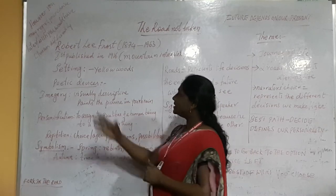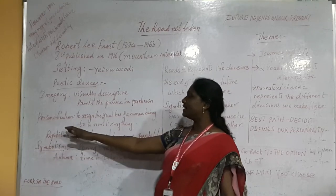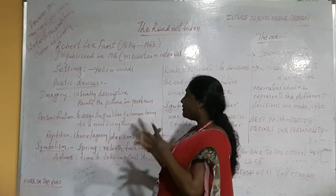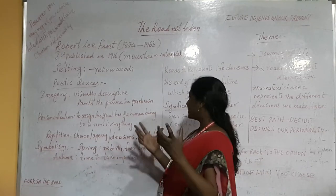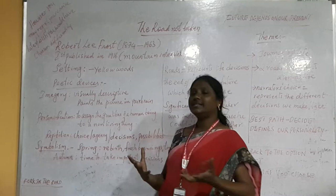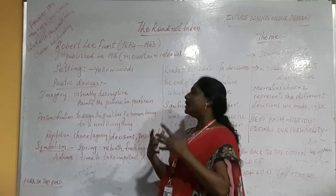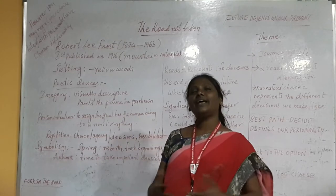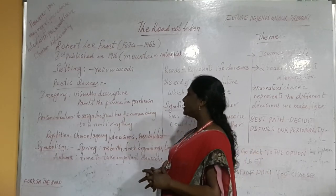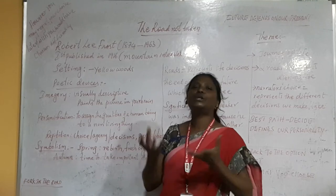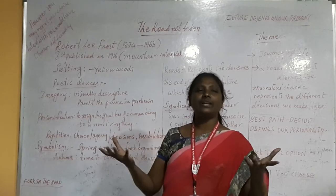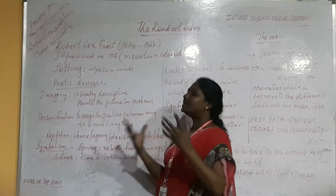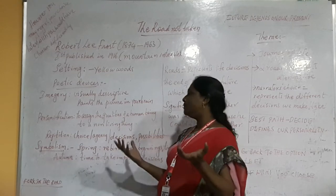Now let us take another device: personification. What is personification? It is assigning the qualities of a human being to a non-living thing. We can see many references in the poem where the poet gives human qualities to the leaves — like they were not born. These things help us understand more about the poem.